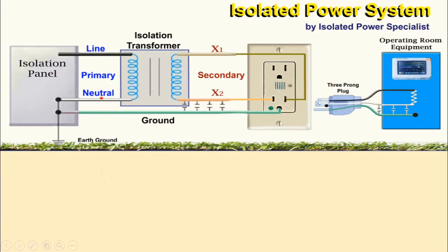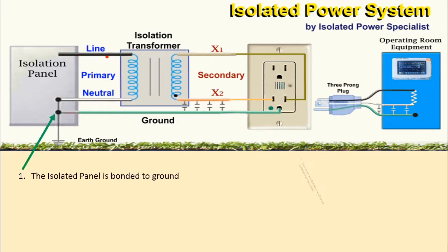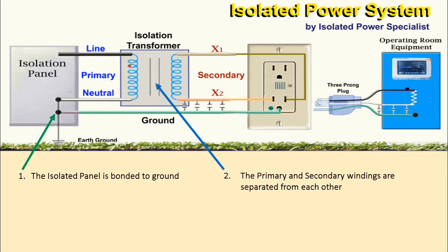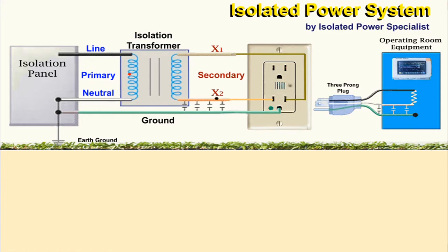Nor are the secondary windings referenced to earth ground. So first, we need an isolation panel to be grounded to earth ground. The second condition is to ensure that the isolation transformer's primary and secondary windings are separated from each other. The primary side shows the line and neutral connections, and this is true since the neutral is grounded to earth ground. However, on the secondary side, neither connection is grounded. Therefore, there is no neutral, so we can't call it line and neutral. We chose to refer to these connections as X1 and X2.